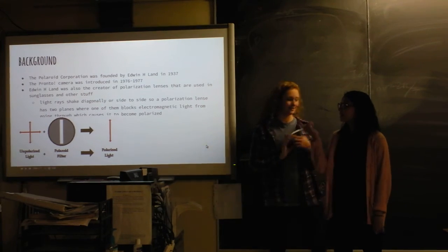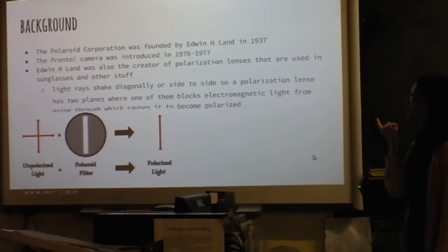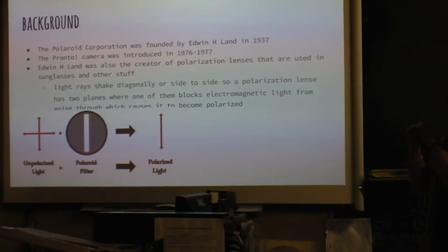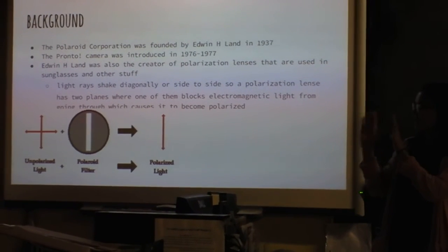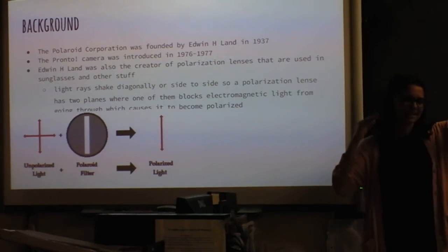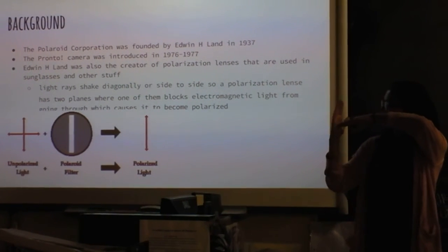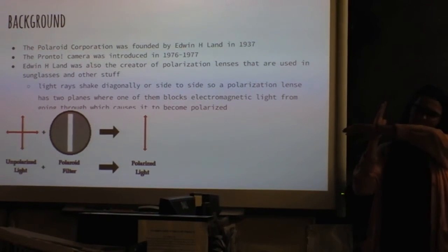So, the Polaroid camera, or the corporation, was founded by Edwin H. Land in 1937. And then this version of the camera was introduced in 1976 and 77. And then Edwin Land also was the creator of polarization lenses, which are used in sunglasses and stuff. And it works like this. So, unpolarized light's going in and it blocks the electromagnetic light from going through, which causes it to become polarized light.